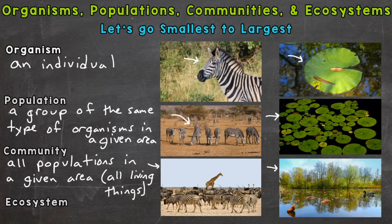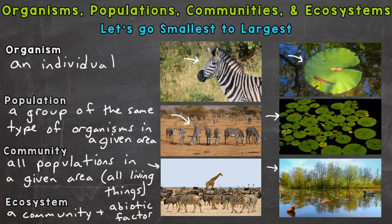To take it a step further, we have an ecosystem. An ecosystem includes the community, but adds all of the abiotic factors within that given area as well — all of the non-living things like temperature, sunlight, water, rocks, etc. So all of the biotic and abiotic factors in that area.